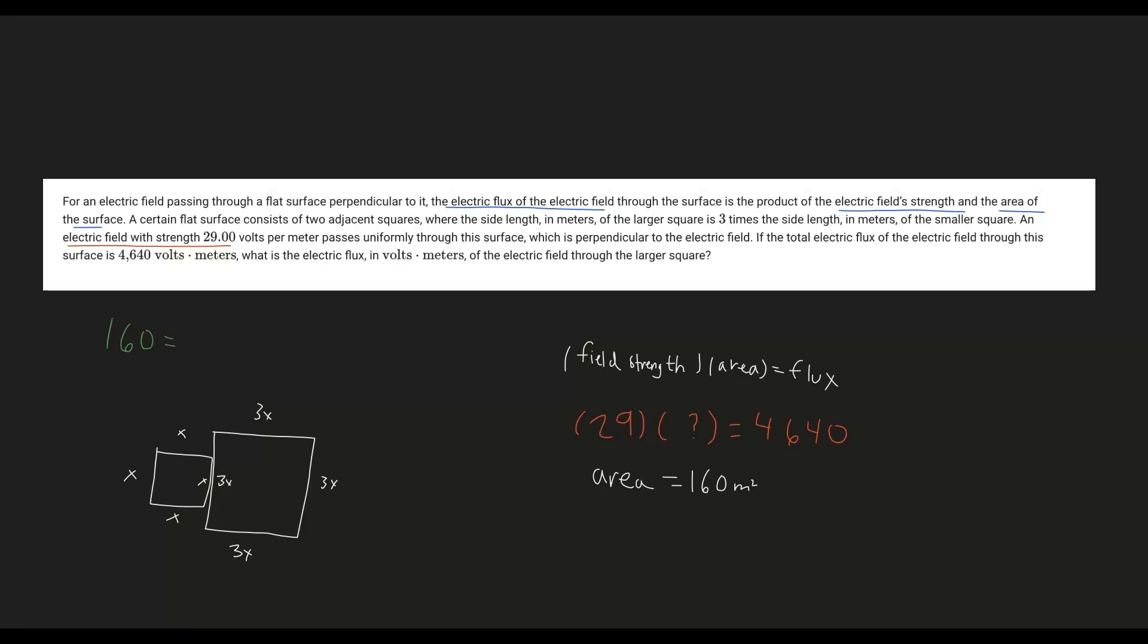We have the first square, to find the area it's length times width, so x times x. We add this to the other square which is 3x times 3x. What we get here is x squared plus 9x squared.